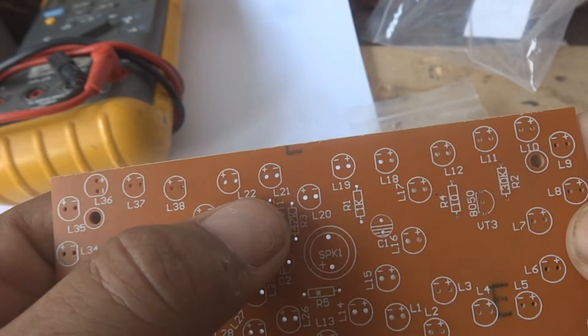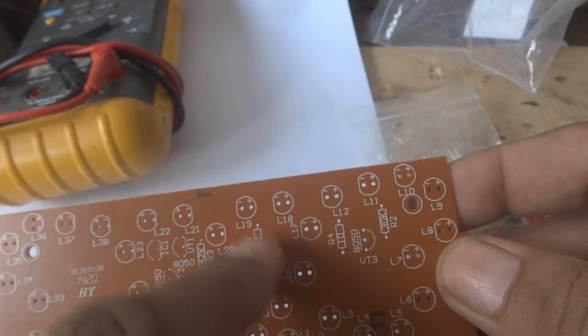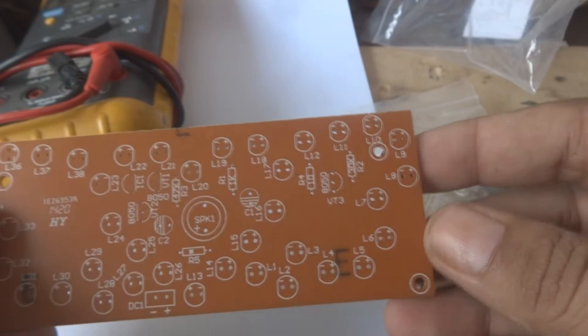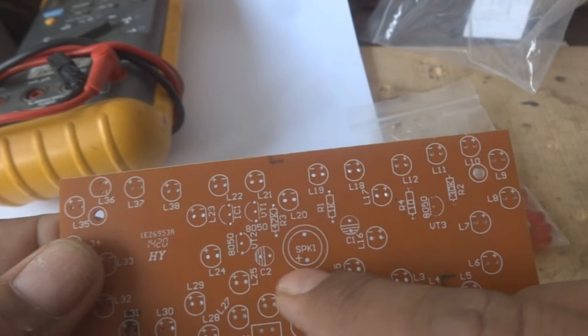Component labels include L37, L38, L23, L22, SPK1, VT2, R1 1K for resistors. The problem is some components are not labeled with values. Capacitors C1 and C2 are not showing values.